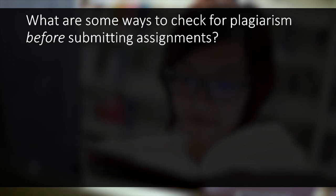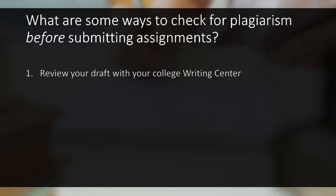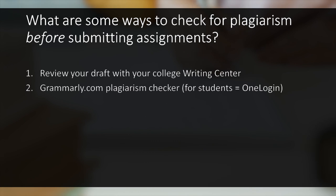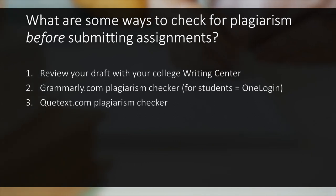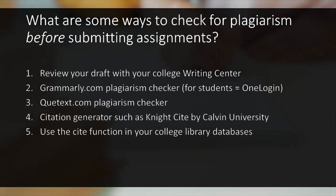What are some ways to check for plagiarism before submitting assignments? One way is to review your draft with a writing center consultant. You can also run your draft through a plagiarism checker, such as grammarly.com or quitex.com. You can use a citation generator, such as Night Cite, or the Cite function in the college library databases.